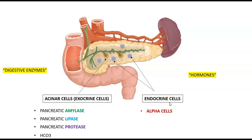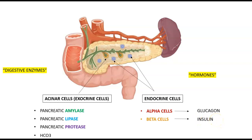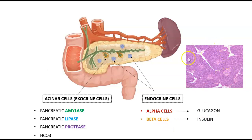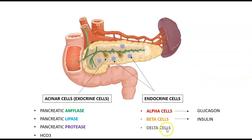On the endocrine side there are three types of cells. Alpha cells release the hormone glucagon, which increases blood sugar levels. Beta cells — the islands of Langerhans visible on a histological picture — release the hormone insulin, which brings blood sugar levels down. Delta cells release somatostatin, which acts as a regulator of these two hormones, inhibiting glucagon and insulin and serving as a homeostatic mechanism to keep them in check.